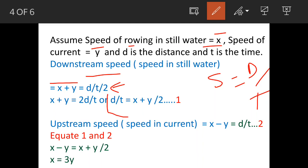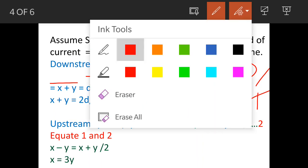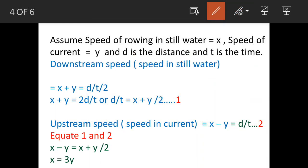Now we'll see the upstream side. Upstream, it is x minus y. Same formula: speed equals distance upon time, so here it will be equal to d/t. This becomes our equation 2.